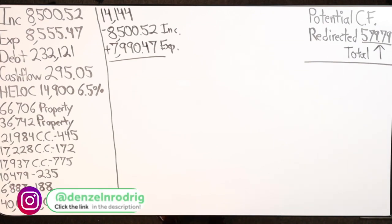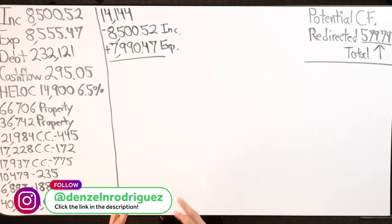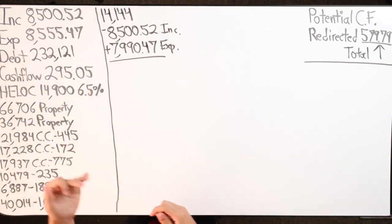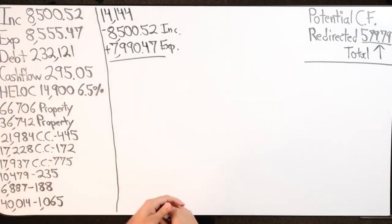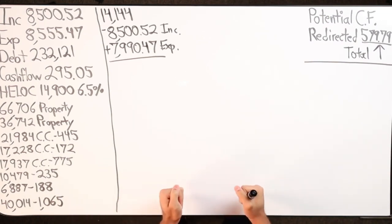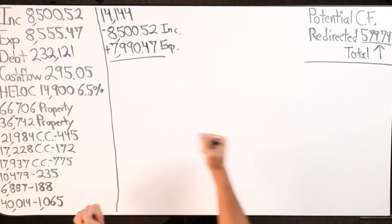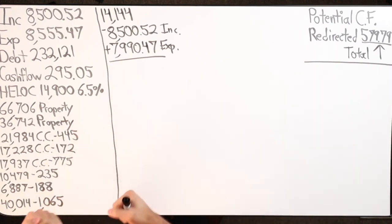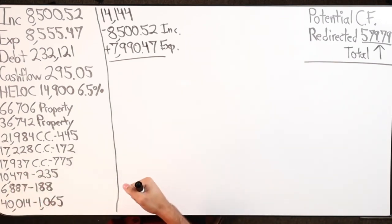We have an individual — a business owner — here's what went down. Their income is $8,552, expenses are $8,555.47, so we're already negative. Their debt is $232,121. They do have more debt but we only went over some specific things. What happened is he had a partner who pulled out of some investment deals, and so he took over some debts.